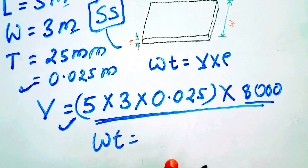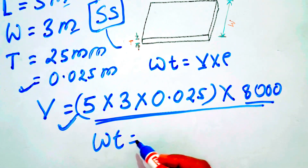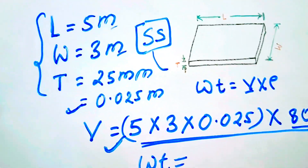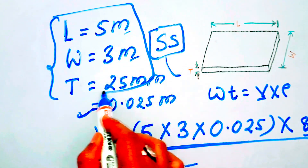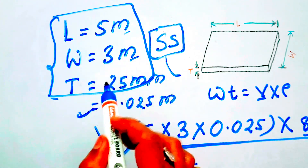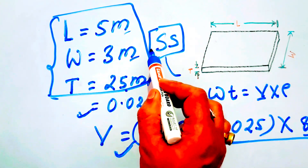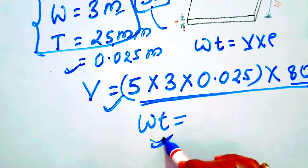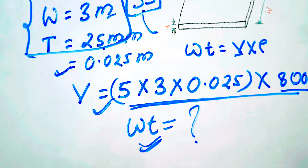Friends, I expect you to calculate this and write in the comment box the weight of this plate — a plate with length 5 meter, width 3 meter, thickness 25 mm, made of stainless steel. Hope you liked this video. Thank you very much.